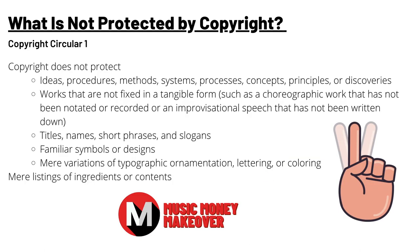What is not protected by copyright, from Copyright Circular Number 1: copyright does not protect ideas, procedures, methods, systems, processes, concepts, principles, or discoveries; works that are not fixed in a tangible form — such as a choreographic work that has not been notated or recorded, or an improvisational speech that has not been written down. Also not protected: titles, names, short phrases and slogans, familiar symbols or designs, mere variations of typographic ornamentation, lettering or coloring, or mere listings of ingredients or contents.